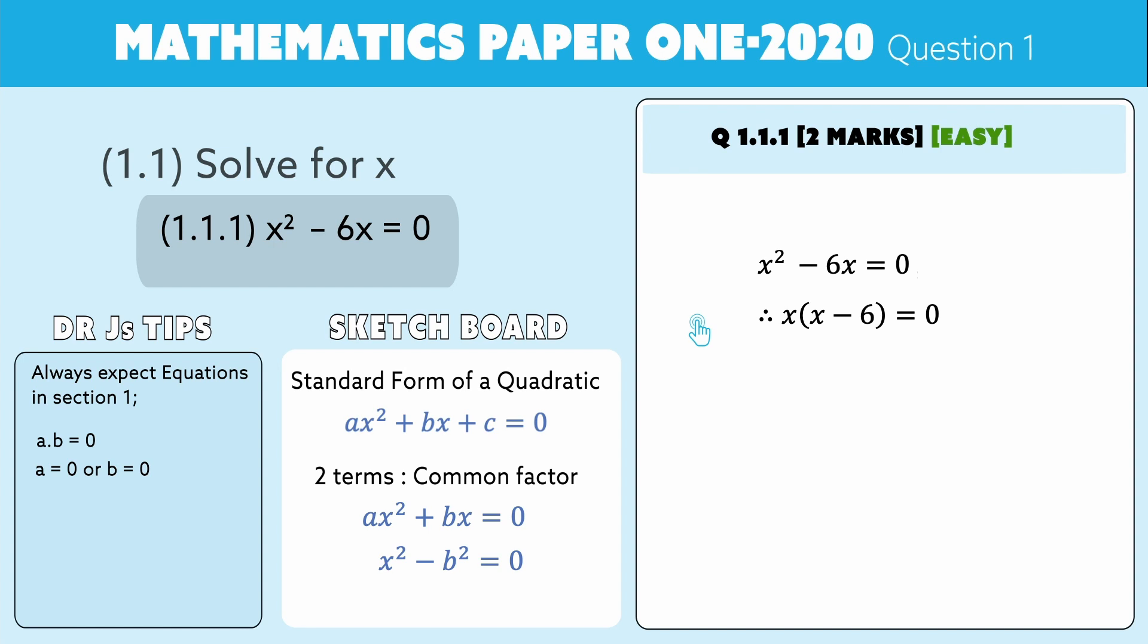This is what we've got: we've got x multiplied by x minus 6 in the bracket. So either x is naught, or the x minus 6 will be naught, which then means that x has to be six. The x transposes to the right.